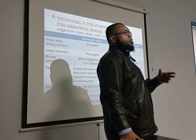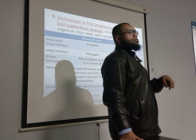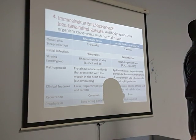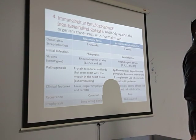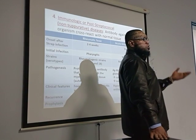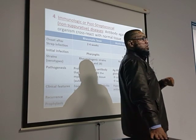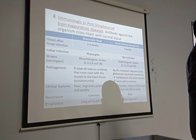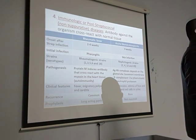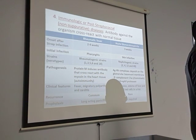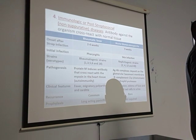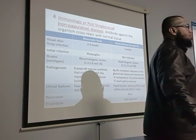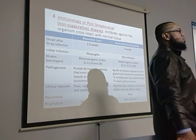Both glomerulonephritis and rheumatic fever accompany upper respiratory tract or skin infection. First the patient gets the infection; after two to four weeks, rheumatic fever or glomerulonephritis develops. Features of glomerulonephritis include hematuria, edema, puffy face, and hypertension. Rheumatic fever is recurrent, so long-term penicillin prophylaxis is required. Glomerulonephritis is not recurrent so prophylaxis is not required.